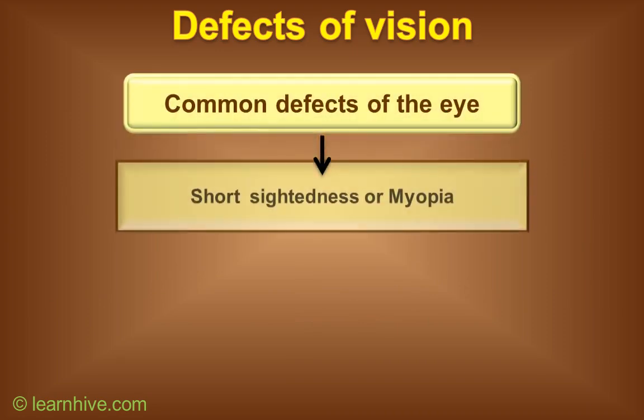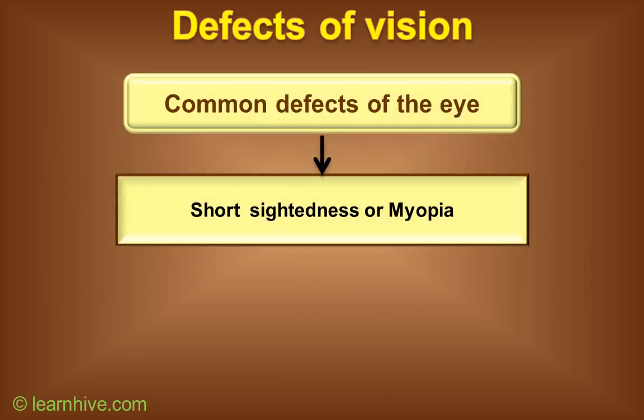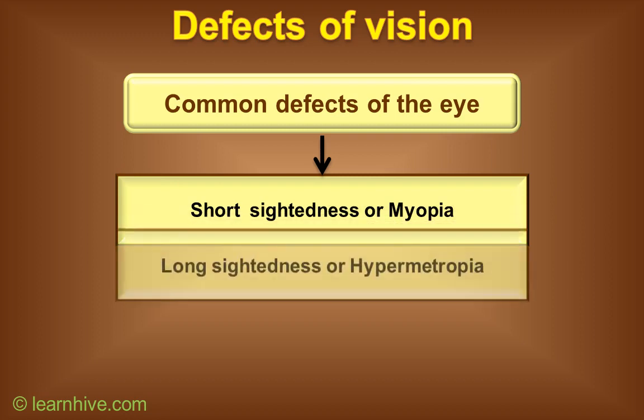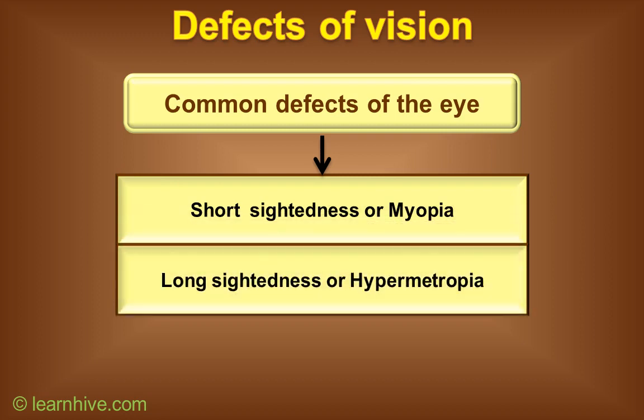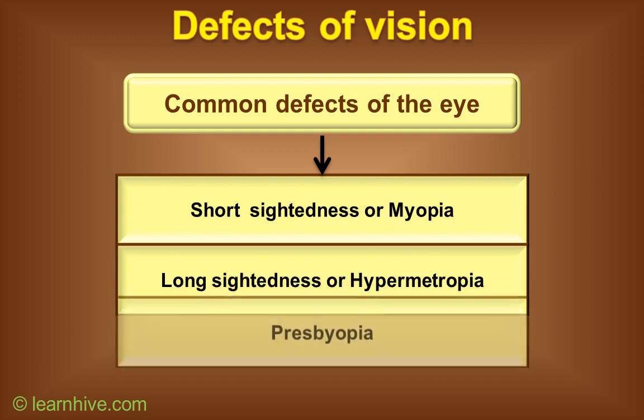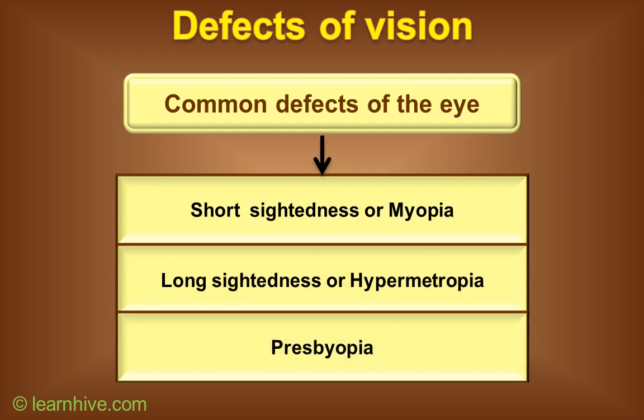Common defects of the eye are: 1. Short-sightedness, or myopia. 2. Long-sightedness, or hypermetropia. 3. Presbyopia.